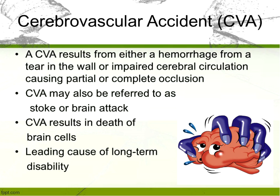The bottom line is that a CVA is going to result from either a hemorrhage, from a tear in the wall, or from an impairment of the cerebral circulation causing partial or complete occlusion. We can sometimes call this a stroke or a brain attack. What happens is we actually have death of the brain cells, and then as a result ending up with long-term disability. The impact can be physical, cognitive, and emotional.